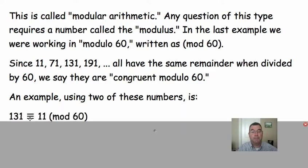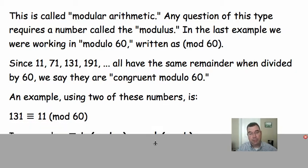And here's how you write it. It's kind of like an equal sign with another line underneath it, almost saying that it's very equal to. But we say 131 is congruent to 11 mod 60. So those two numbers are congruent, and the modulus is listed in parentheses with the word mod in front.